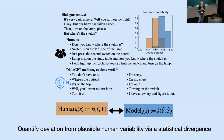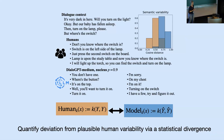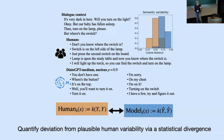We will measure the variability within each set independently using some pairwise measure. We can measure the variability within all the automatically generated productions and all the human generated productions. We can define different types of measures — for example, semantic variability using vector embeddings and cosine similarity between sentences, lexical variability measuring word overlap, and syntactic measures. Then we compare by measuring the distance between these two sets of variabilities. Here's an example of another dialogue context: 'It's very dark in here. Will you turn on the light? Okay, but our baby has fallen asleep. Then turn on the lamp, please. But where's the switch?' You can see five possibilities generated by humans and ten possibilities generated by DialoGPT.